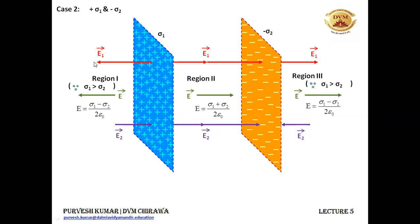This is the electric field in three different regions because of two infinitely charged plane sheets carrying opposite charges. The electric field because of a plane sheet does not depend on the distance. That's why at every point in region 1 it will have the same value, every point in region 2 will have this value, and every point in region 3 will have this value.